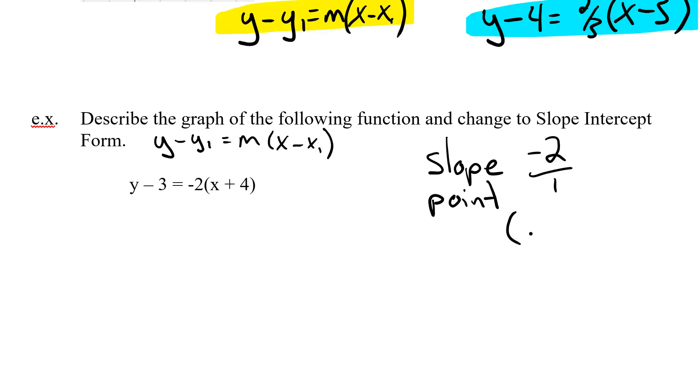My slope is negative 2. Now I'll change that to a fraction. It would be negative 2 over 1. Same idea. And now the point. Well, I've got to take my x value, which is positive 4, and I've got to flip the sign. So that becomes negative 4. And then I take my y value, which is negative 3, and I flip the sign to positive 3. So to describe this particular line, it goes through point, negative 4, positive 3, and it has a slope of negative 2.